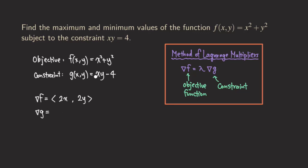The gradient of g is found by taking the derivative with respect to x and with respect to y. For the x-coordinate, differentiating with respect to x gives us y. For the y-coordinate, we get x. So now we have both gradients of f and g and can set up the equation.